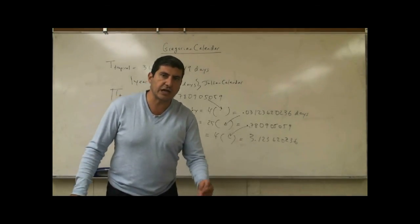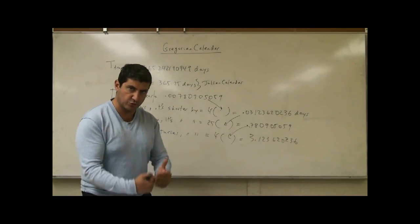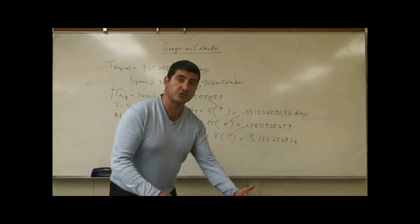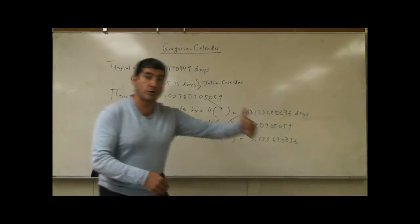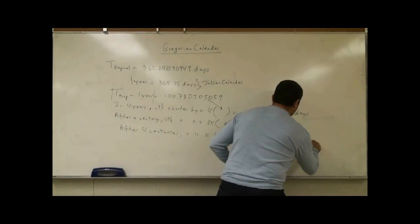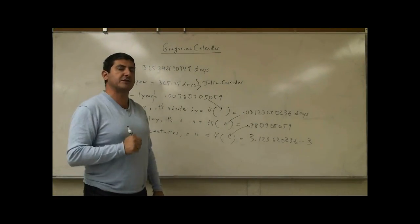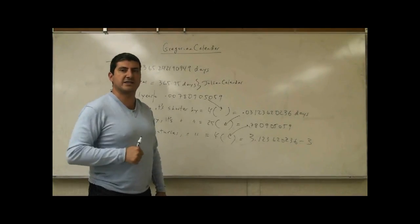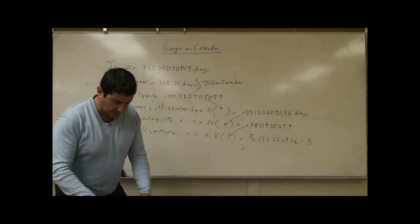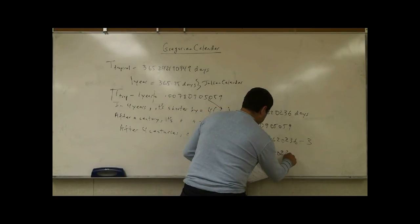Since every four centuries we have over-added by three days, a little over three days, here's what the Gregorian correction says. Skip a leap year every 100 years. So 100 years, you skip one leap year, that's minus one day. The next 100 years, skip another leap year, that's minus two. The third 100 year, you skip a leap year, that's minus three. The fourth leap year, you don't skip the leap year. So basically, you subtract three from this. So every 400 years, you skip three leap years, but the 400th year, you do add the leap year. So that means it kind of corrects for this problem.